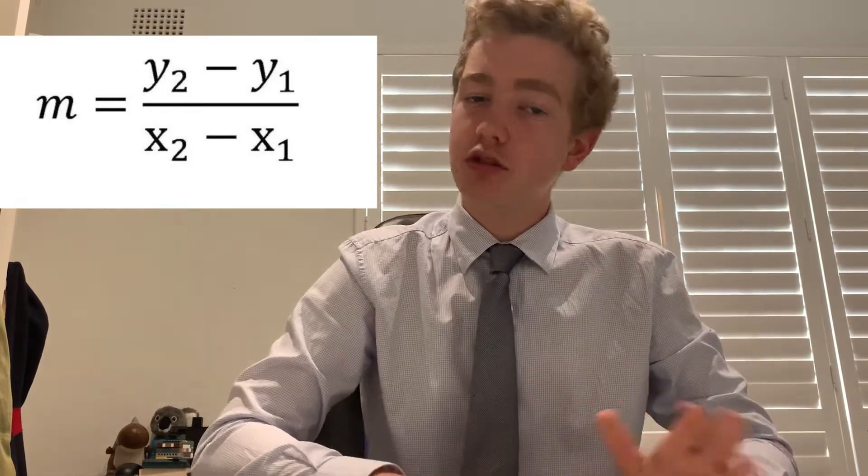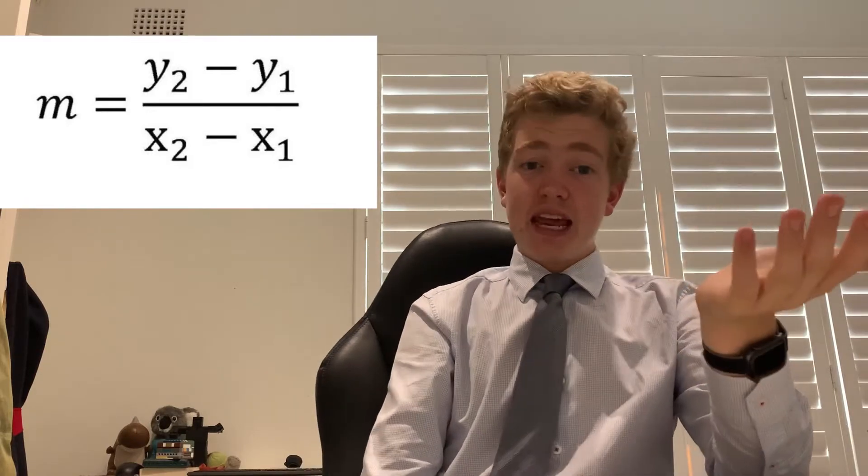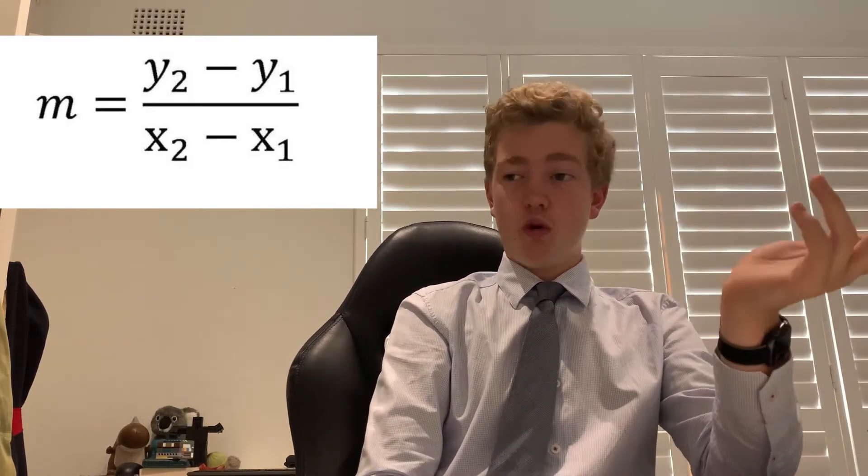Gradient is basically the slope of a line — how steep it is. A higher gradient means a steeper line; a lower gradient means a shallower one. Gradients are really important when graphing a line because the equation of a line is y = mx + c, where m is the gradient. The gradient formula is rise over run: m = (y2 − y1) / (x2 − x1). Remember: y's on top, x's on the bottom, and it's the twos first then minus the ones.